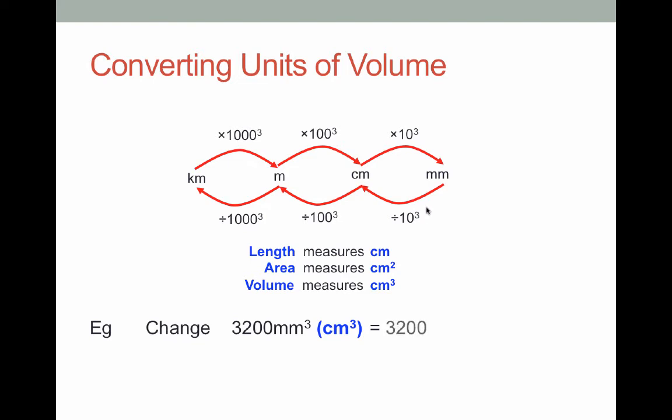So 3200 is what I'm going to start with and I'm going to divide by 10 cubed. This gives me an answer of 3.2 centimeter cubes. So if I have 3200 millimeter cubes and I put them all together it's the same as 3.2 centimeter cubes.